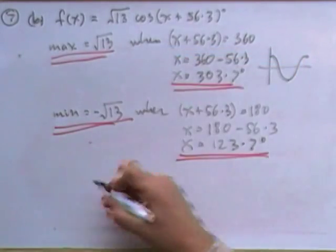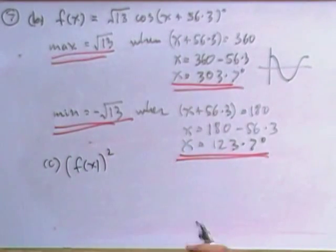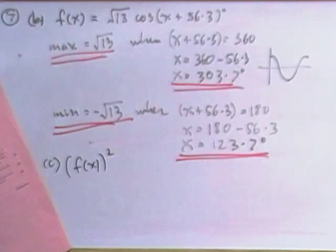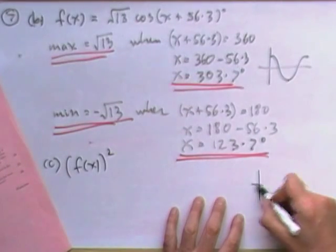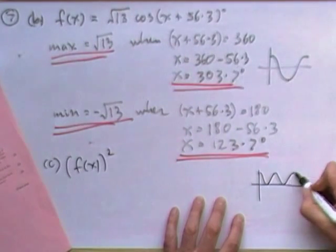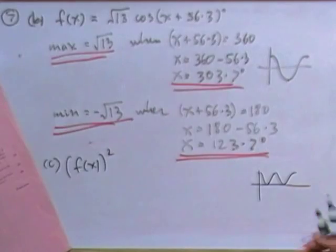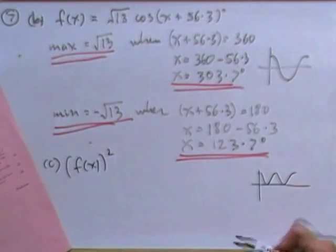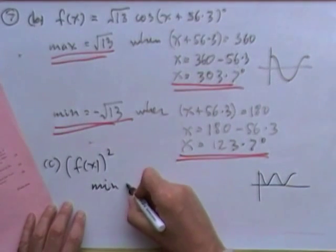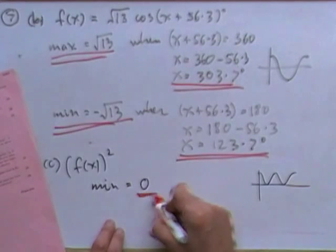Now, part C, one mark. Write down the minimum value of this. F of x squared. Well, there's two ways you could do it. You could square that. That would be 13 cos squared. But cos squared, the graph of cos squared would look like this. If that's a graph of cos, cos squared means all the negative values would be positive values. It'll end up looking like this. The square of something can't be negative, so the minimum value must be 0. So, you could just answer it from that. It's going to vary between 0 and 13. But it doesn't ask for the maximum, it just asks for the minimum. So, for that one, for that, the minimum value is going to be, does it ask when it happens? No, just the value. The minimum will be 0. And that's question 7.